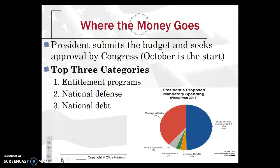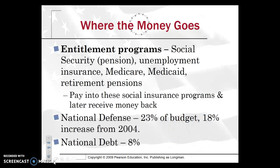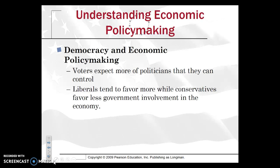Where the money goes: the president submits the budget and seeks the approval of Congress, with October as the official start of the fiscal year. The top three categories: number one is entitlement programs — Social Security, Medicare, Medicaid — which you pay into and will later receive. National defense comes in at number two at 23% of the budget, which has steadily increased during the wars in Iraq and Afghanistan. Payment of the national debt is number three at 8%, paying that off in interest. Liberals tend to favor more taxation, while conservatives favor less taxation and less government involvement in the economy — they have a major hand in shaping fiscal policy.